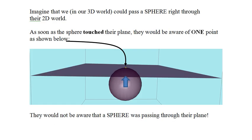Imagine that we in our 3D world could pass a sphere right through their 2D world. As soon as the sphere touched their plane, they would be aware of one point as shown here. They would not be aware that a sphere was passing through their plane.